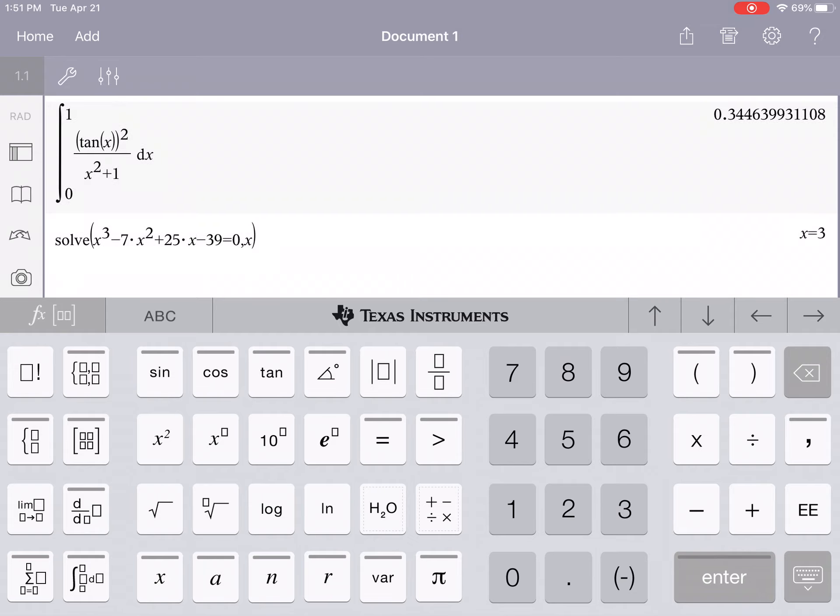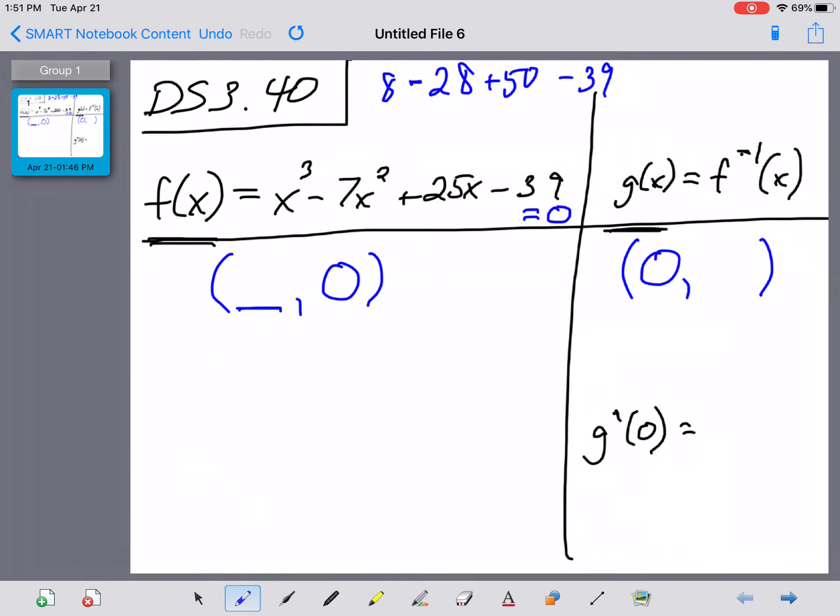And sure enough, I stopped one too short. That didn't surprise me too much. So x equals 3 is the x value that gives us the y value we needed of 0.